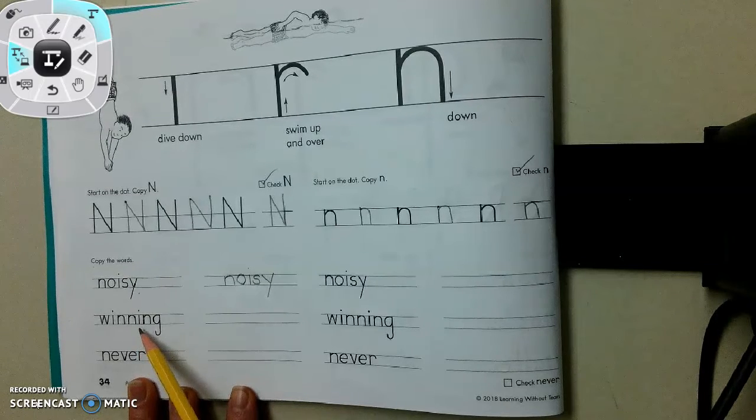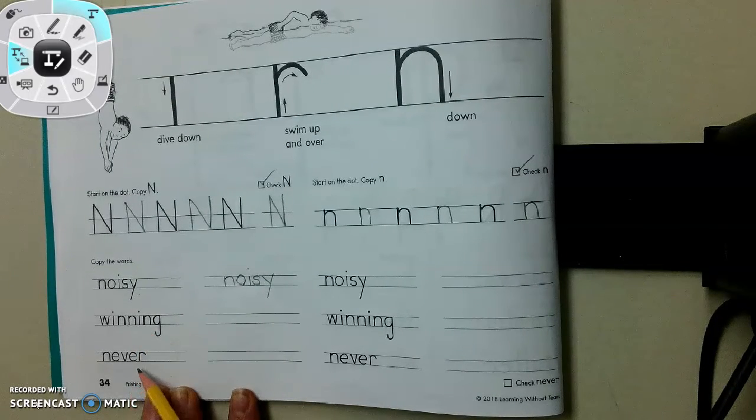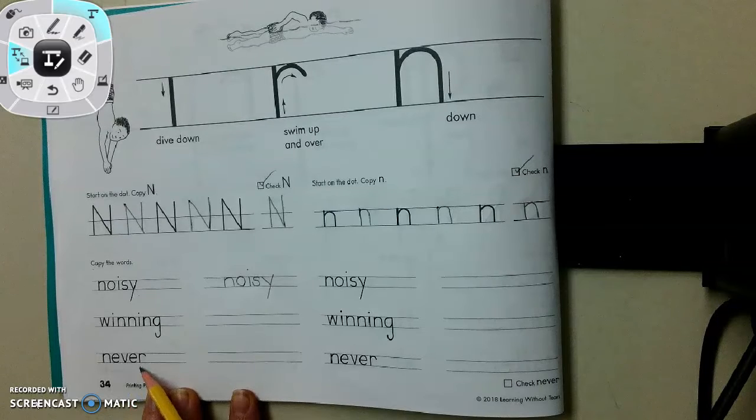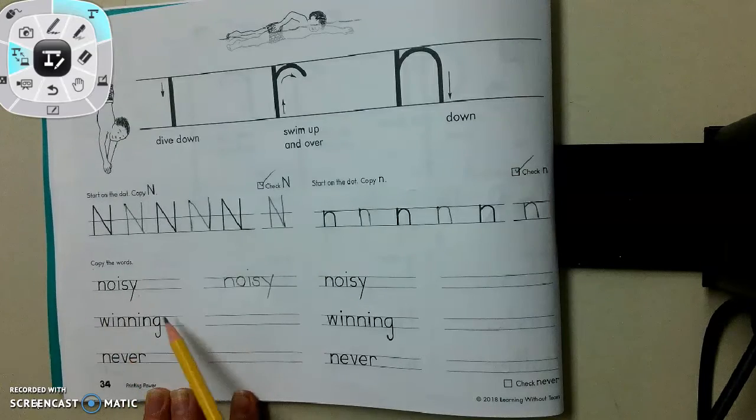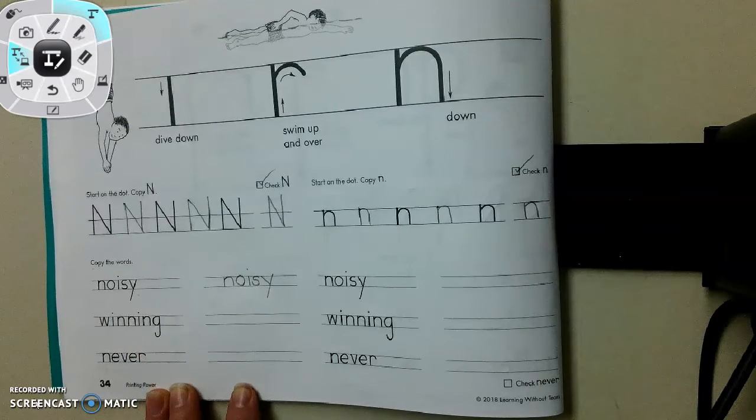What's this word? Winning. You're right. And the last one you're going to practice? Never. Which word has the most N's in it? Yeah, look at winning. Three N's in that word. All right. Good luck, friends.